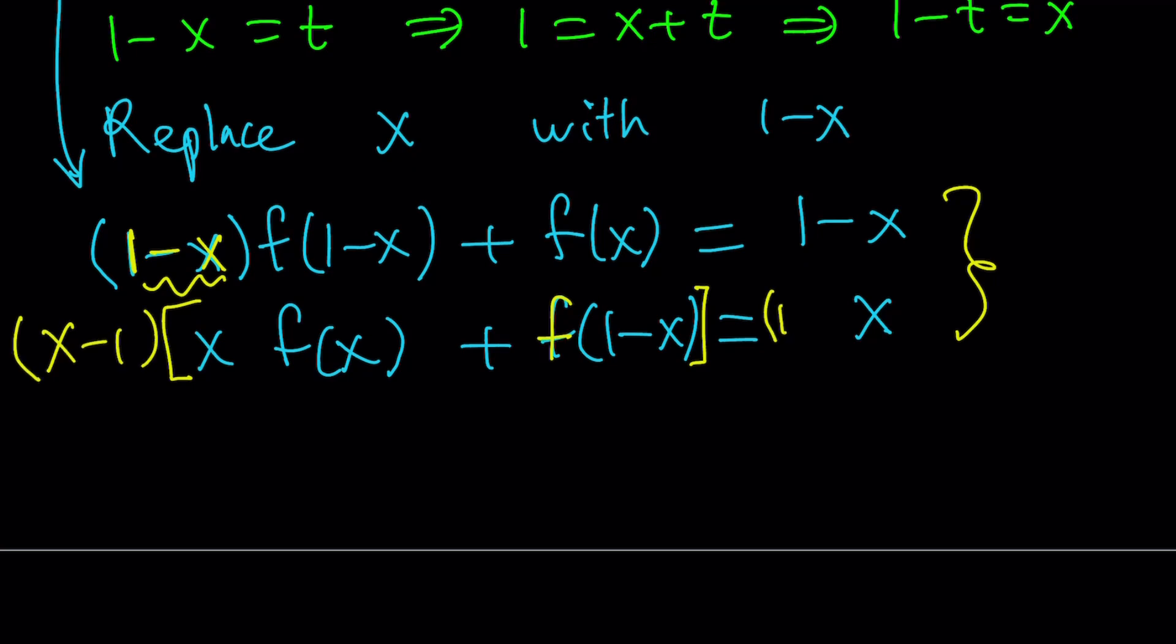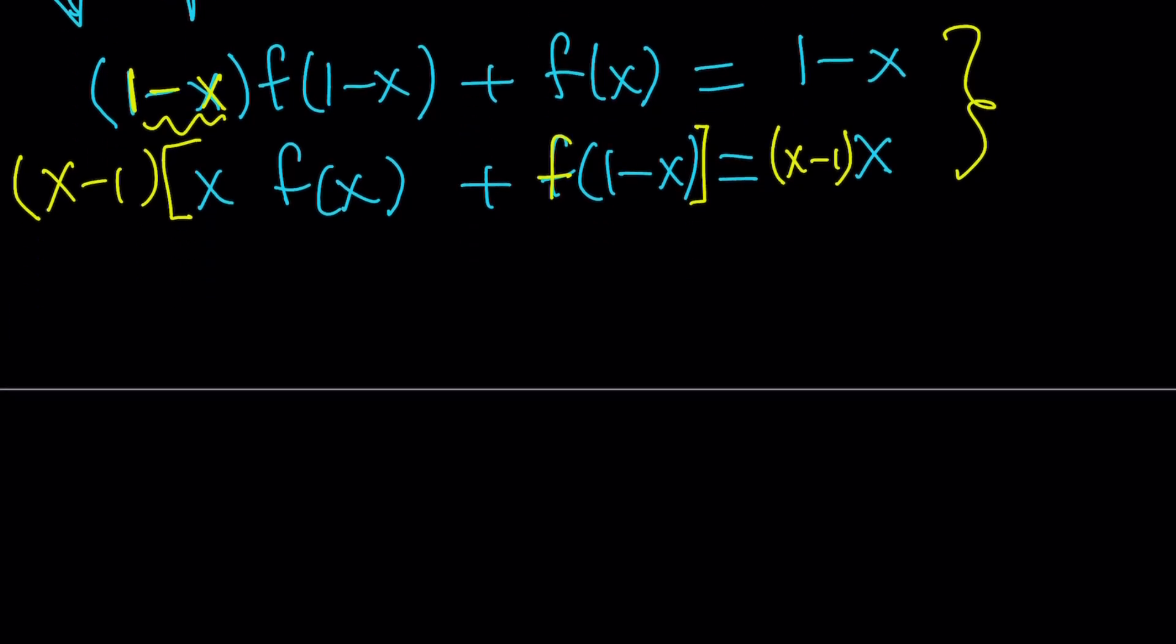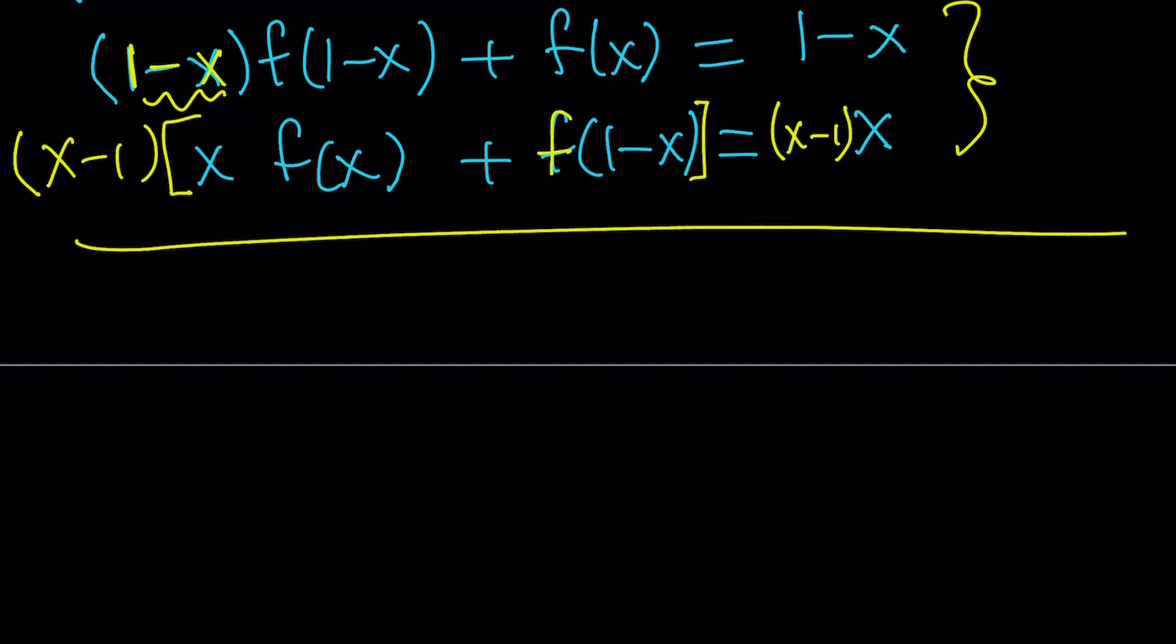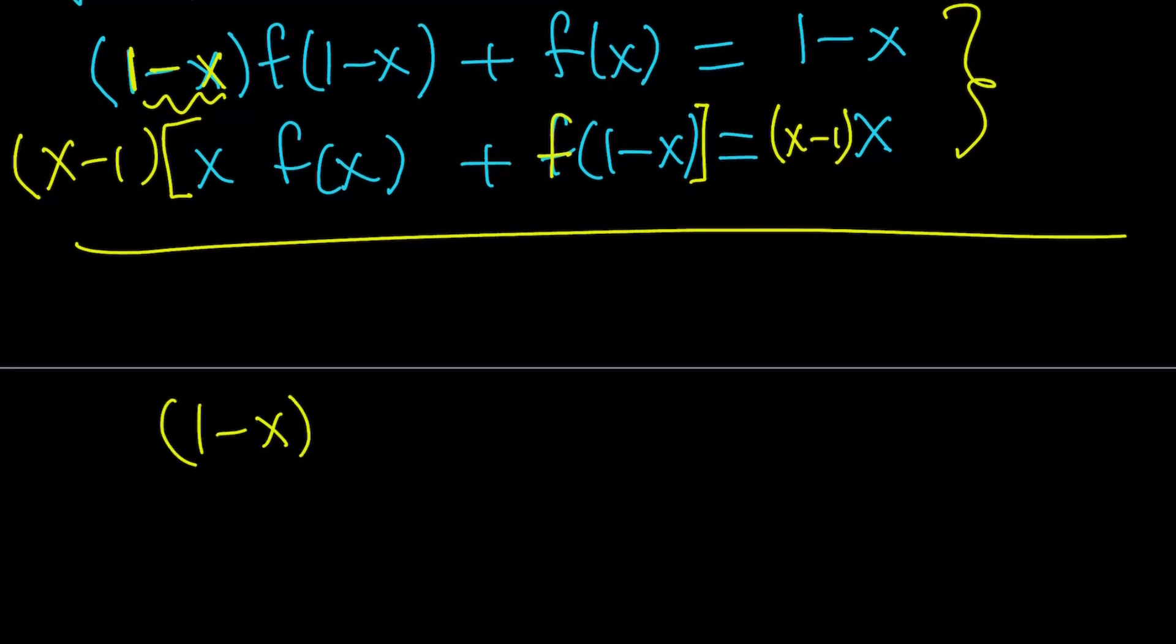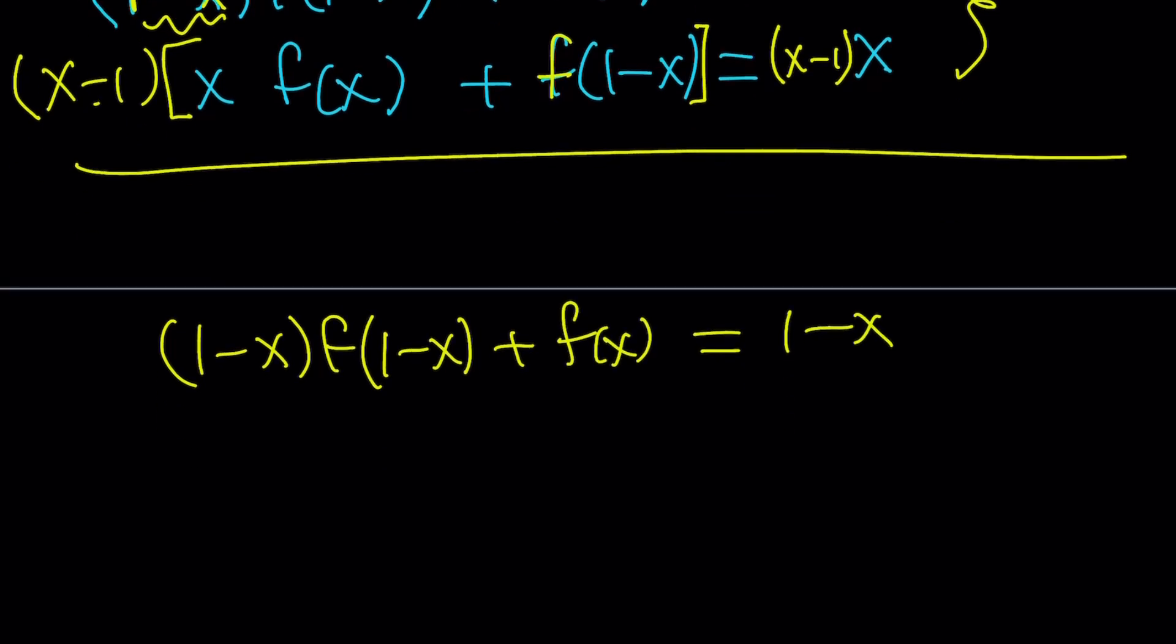Of course, I have to do it on both sides. This is supposed to be x minus 1. And yes, you can multiply from the left. And distribute. Let's go ahead and distribute, and we're going to write our system again one more time. The first one stays the same. And then, the second one becomes x minus 1 times x, that's x squared minus x times f of x. Plus, this one has 1 as a coefficient, so it's just going to be x minus 1 times f of 1 minus x. And the result is going to be x squared minus x.